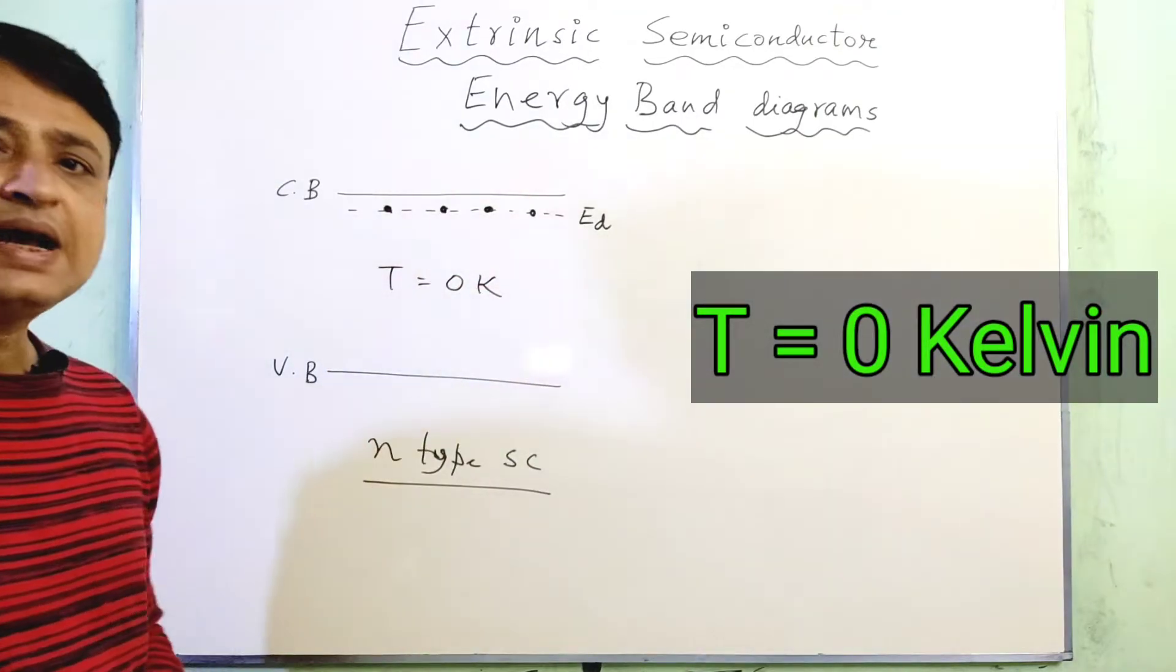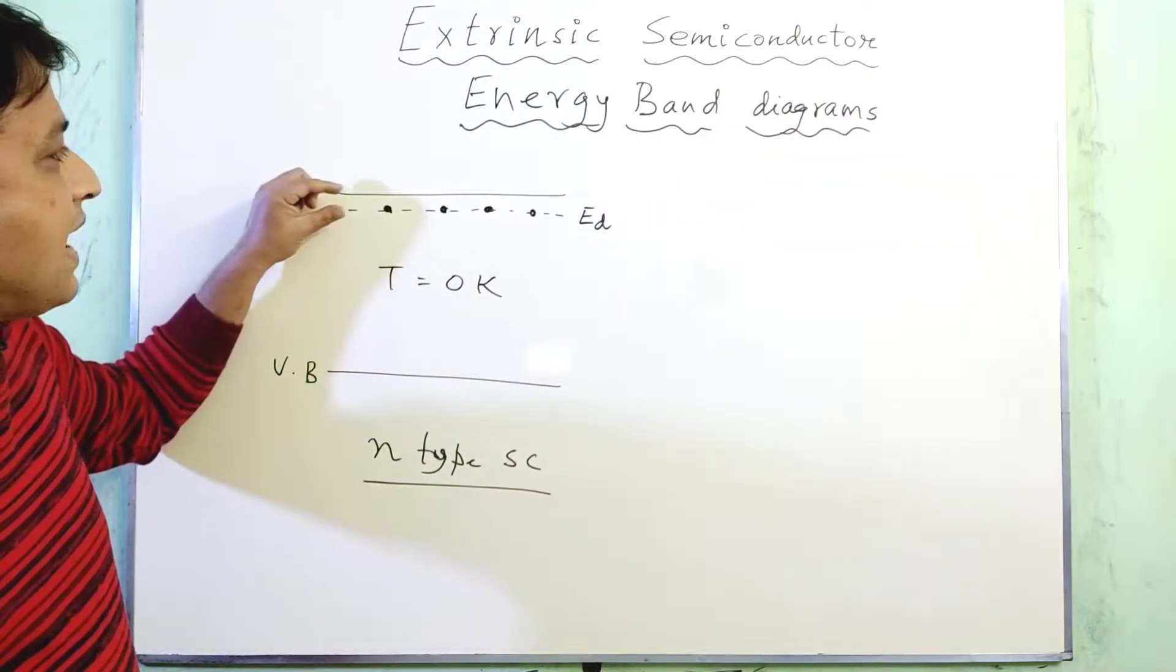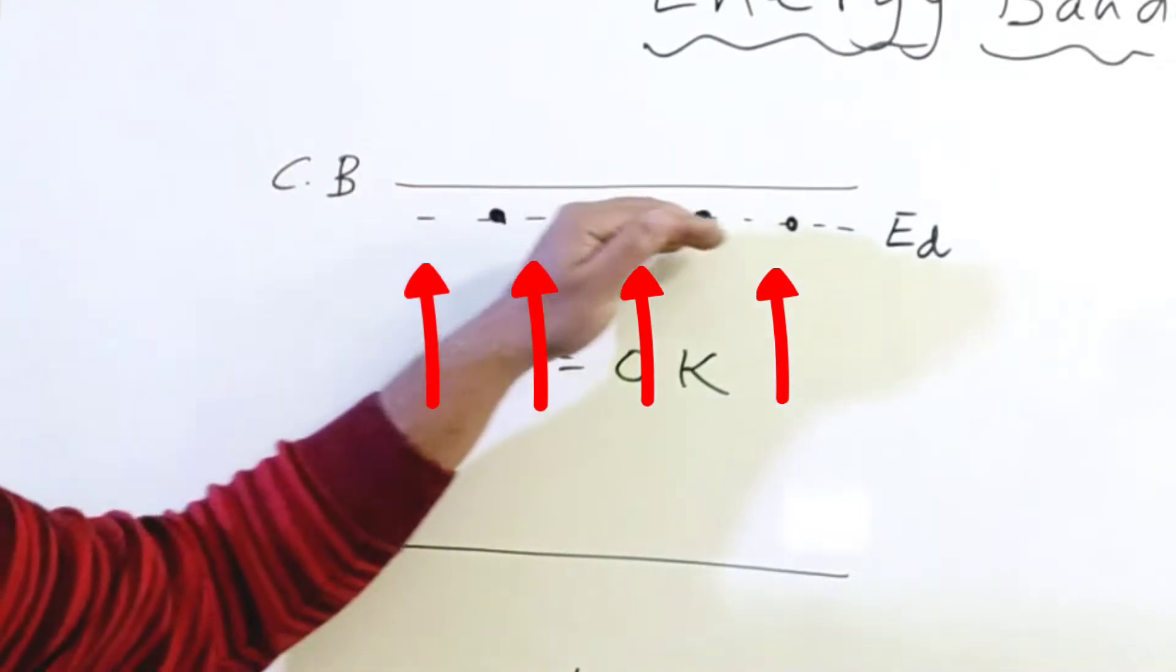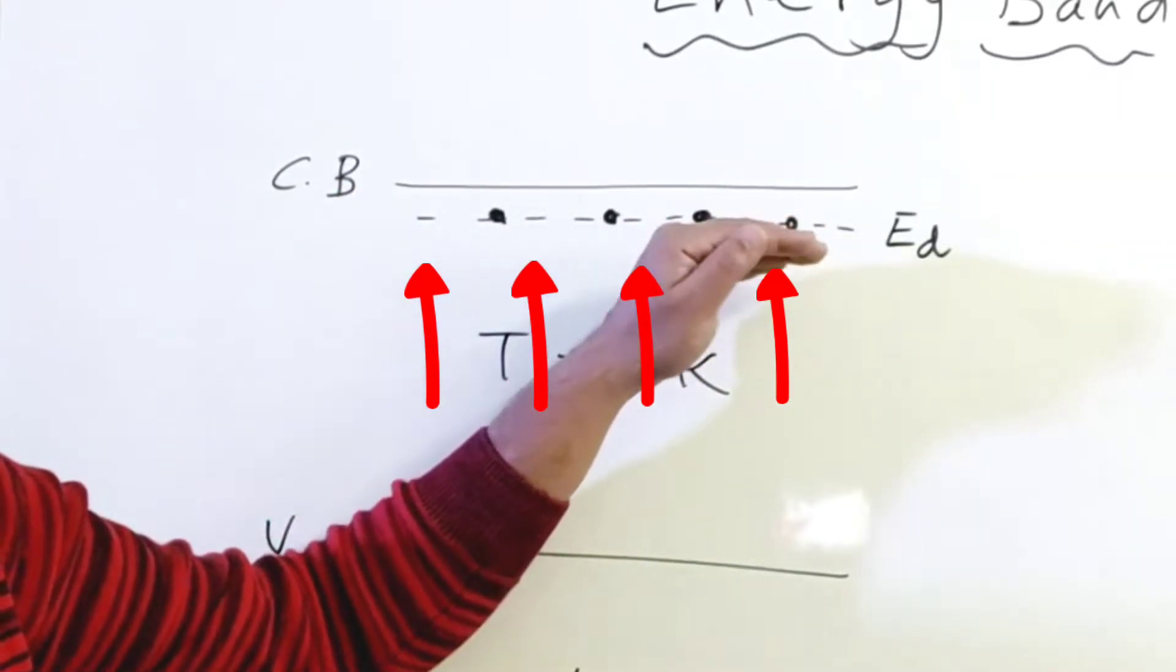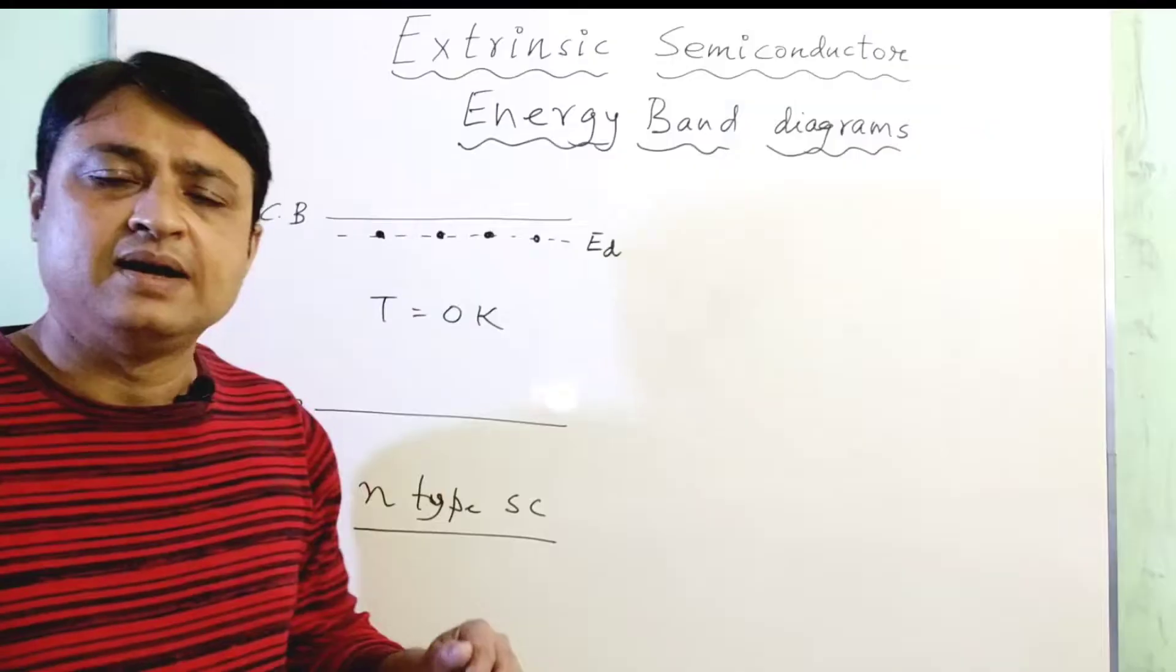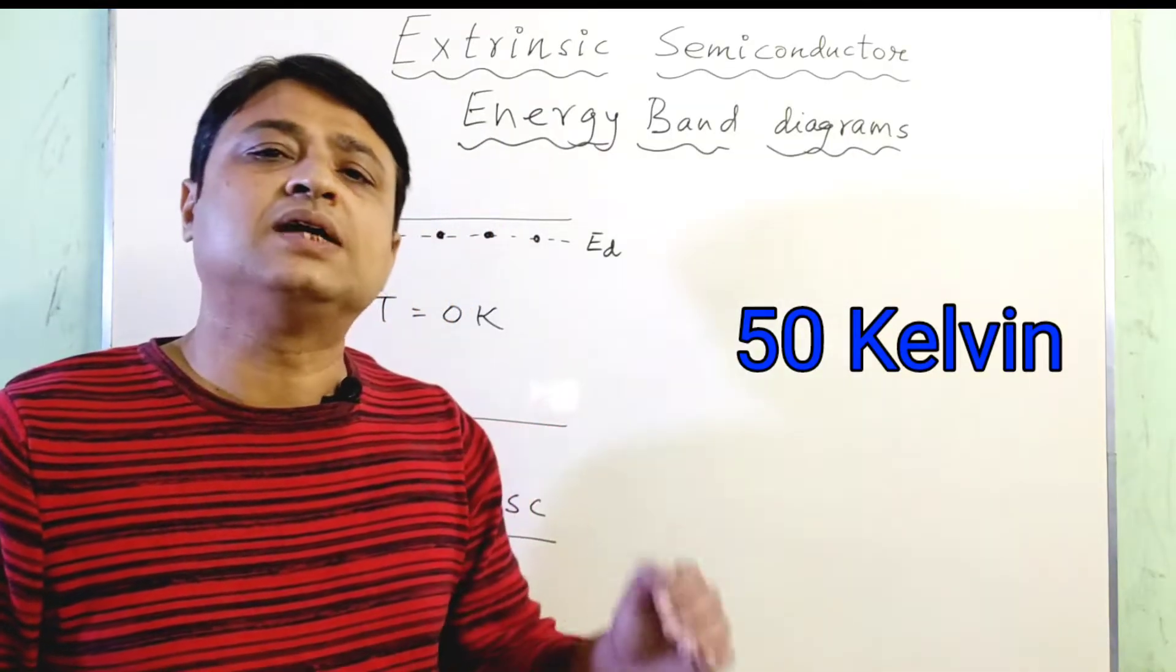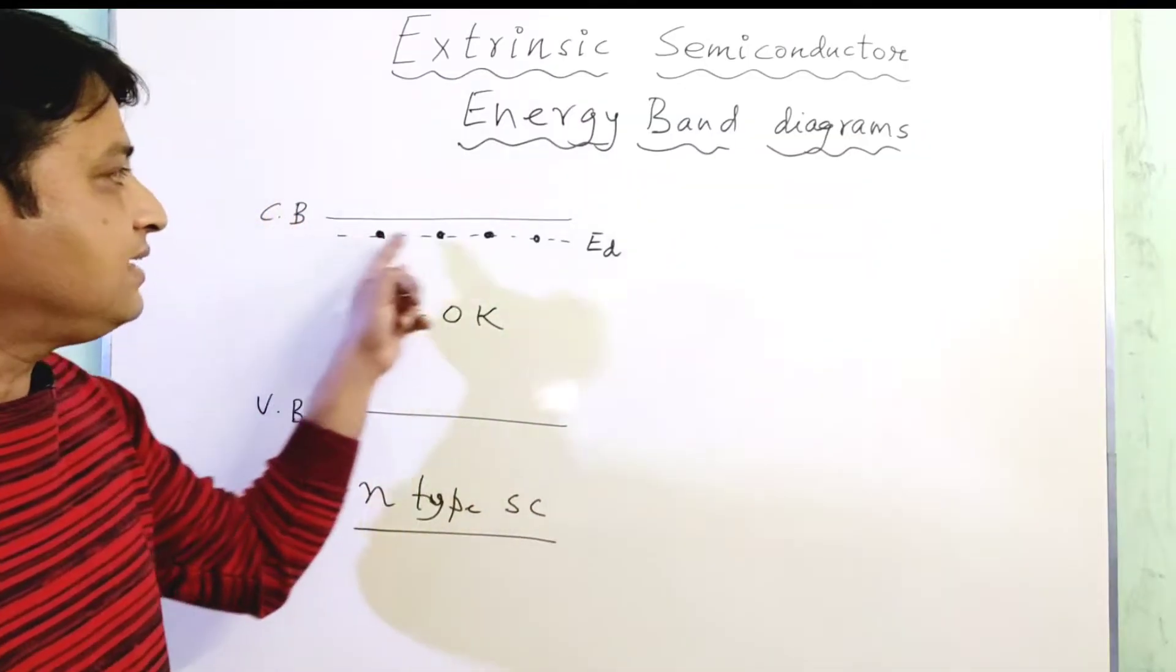As you can see from this figure, if we apply a minimum amount of energy, this much of energy to these donor electrons or to this donor energy state electrons, then they will move to the conduction band. Typically around 50 Kelvin of energy is enough to transfer these electrons which are actually inside the donor level to the conduction band level.